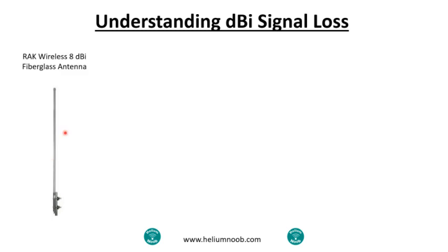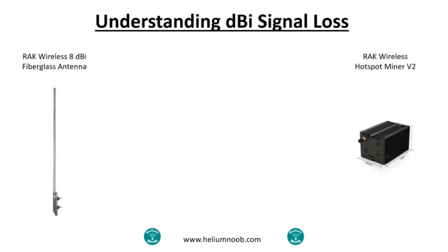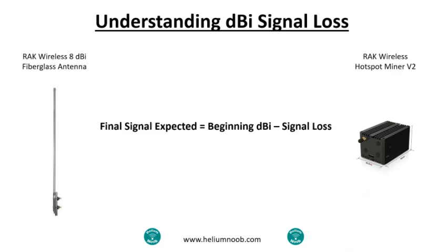So basically, you've got the 8 DBI fiberglass antenna and I have the Rack Wireless hotspot miner V2. Let's take a look at what the final expected signal is. Basically what we're doing is taking our beginning DBI and subtracting the signal loss, and that's going to tell us what we can expect as far as the DBI out of the antenna and the signal strength.